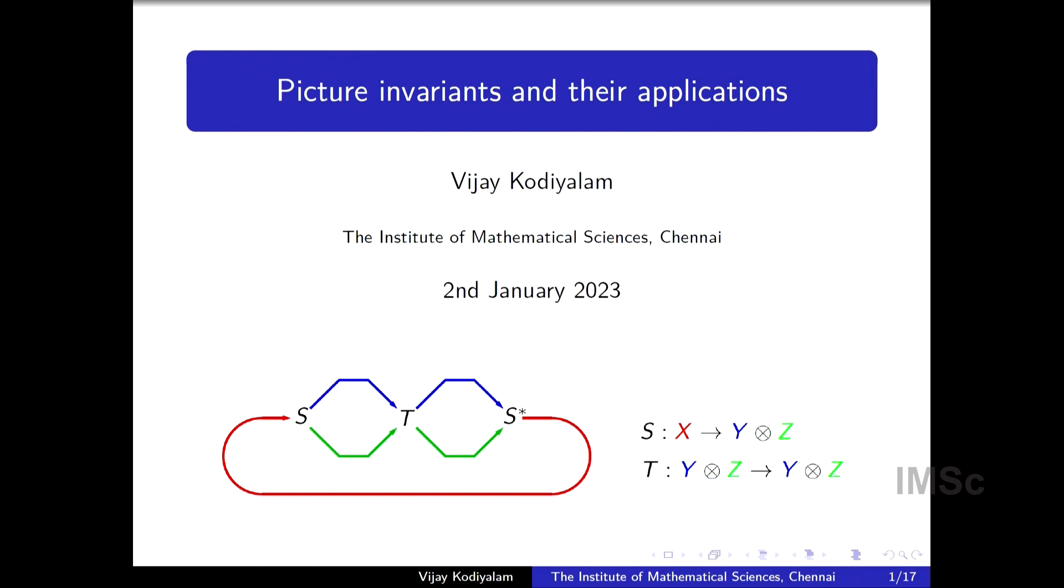As you can see, it's a directed graph. It has vertices and edges. The edges are colored and these colors represent various vector spaces. So X is a vector space, Y is a vector space, Z is a vector space and these are colored in red, blue and green. And then we have operators S, T, S star. These operators go from, typically they go from a tensor product of some of these vector spaces to some other tensor product of these vector spaces.